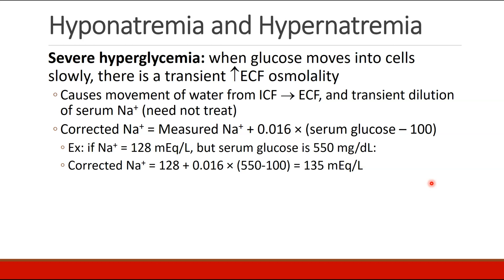There's an equation that can be used to calculate a corrected sodium. For example, a patient whose sodium is 128 but whose serum glucose is 550 — the corrected sodium is actually 135, showing that their sodium is actually normal. Therefore we would not treat this seemingly low sodium level. You don't have to memorize this equation, but it's good to be aware that in cases of severe hyperglycemia, your sodium levels may be inaccurate when they're measured.